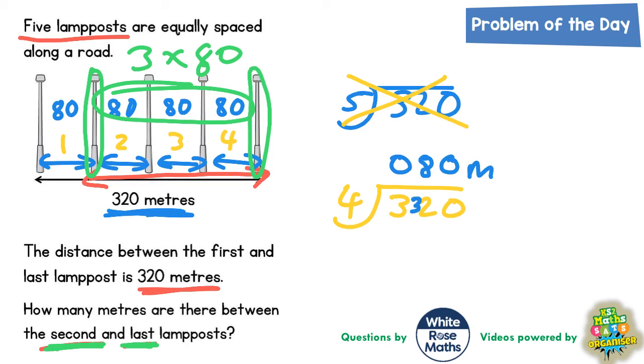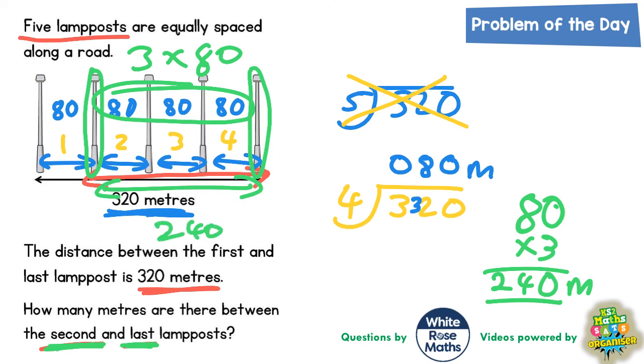Here we go: 80 times 3. What you could do is 3 lots of nothing is nothing, and 3 lots of 8 is 24. So your final answer is 240 meters. The distance between the second and last lamppost is 240 meters.